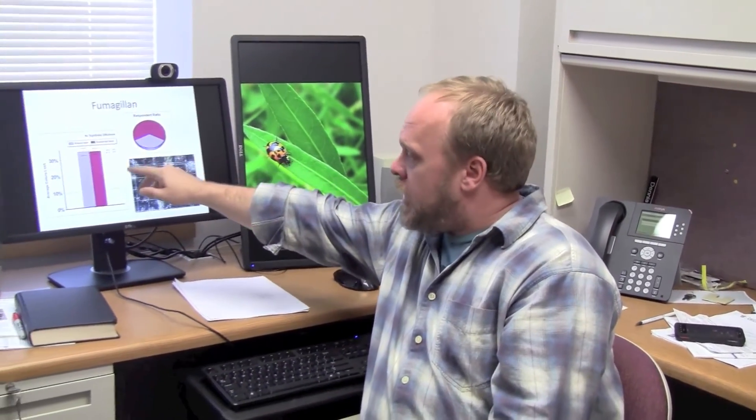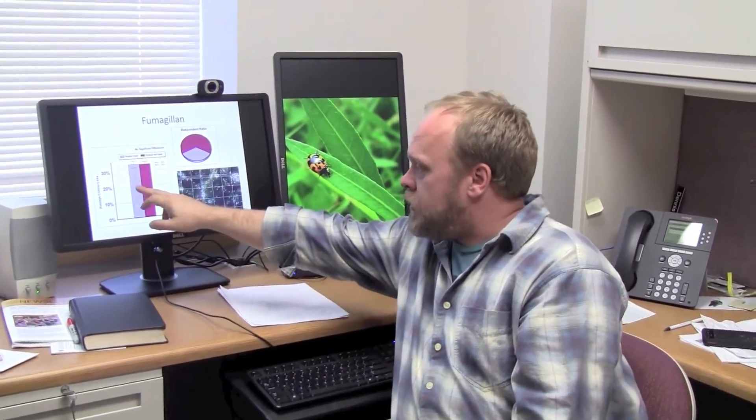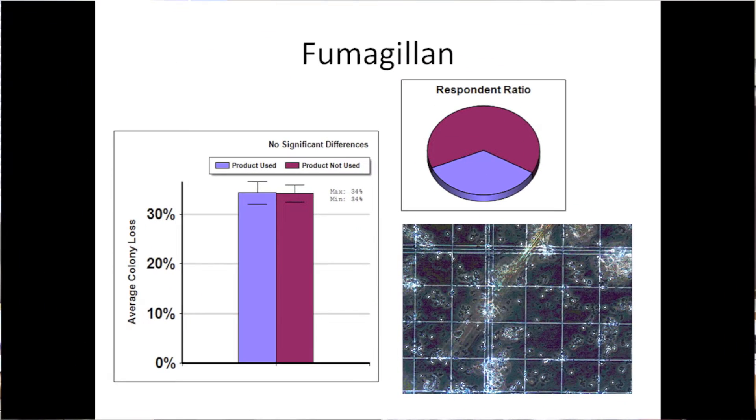Its only known control is fumagillin, and you can see though that there was no difference between those who treated with fumagillin in terms of winter survivorship and those who didn't. Again, that doesn't mean that fumagillin doesn't work. It could very well be that the people who did use it, had they not, would have lost a lot more colonies.